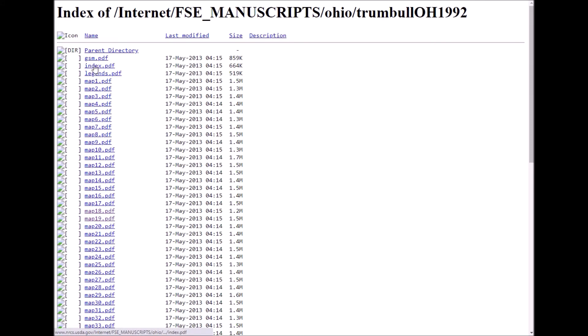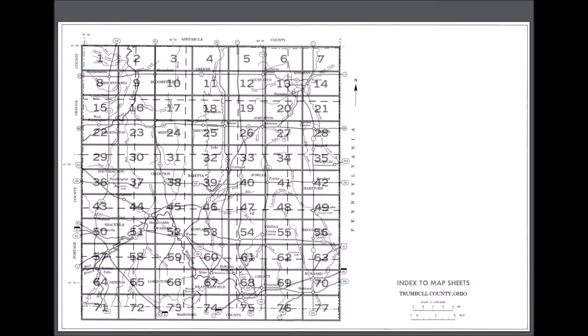If you look at the index page, you can find an index of each atlas sheet for the soil survey manuscript. The idea is to locate the area of interest on the index sheet and then find the corresponding map sheet. So let's say we were interested in atlas sheet number one — we click back to the directory and click on map number one to view the original soil survey mapping for that atlas sheet.